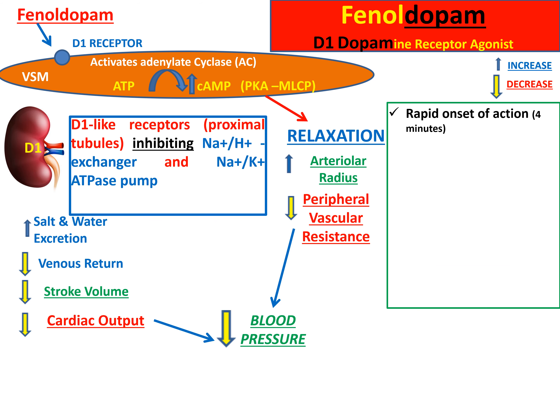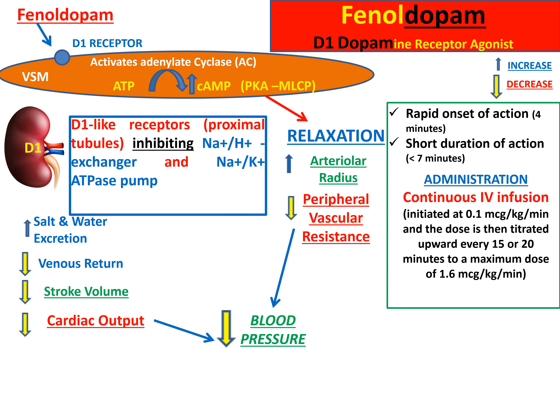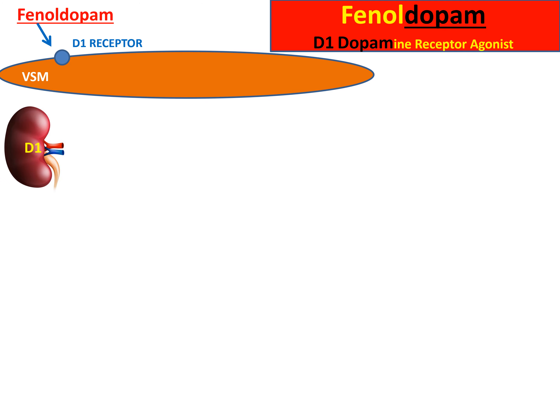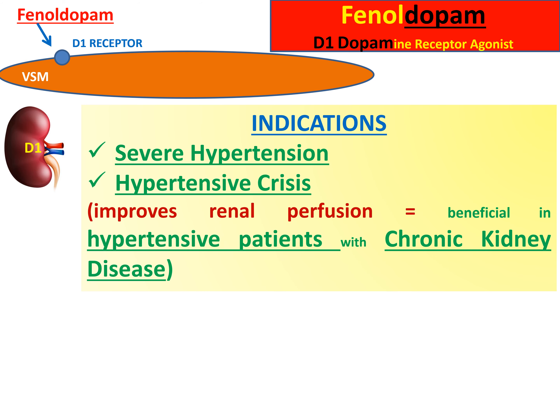Fenoldopam works very rapidly, starting to produce its effect in less than five minutes. However, the duration of action is also very short, less than five to seven minutes, so it must be given by continuous IV infusion. The major indication is management of severe hypertension and hypertensive crisis. It is the only intravenous agent that improves renal perfusion by stimulating D1 receptors in the renal arteries, increasing blood supply to the kidney, making it beneficial in hypertensive patients with chronic kidney disease.